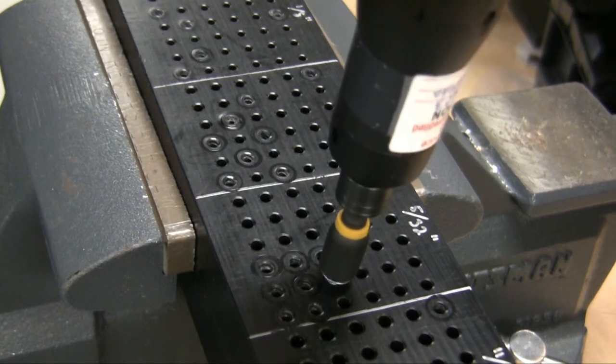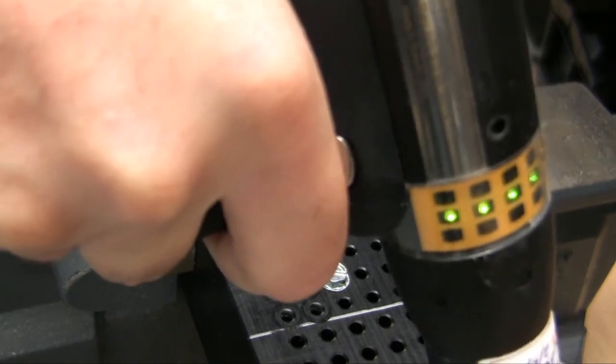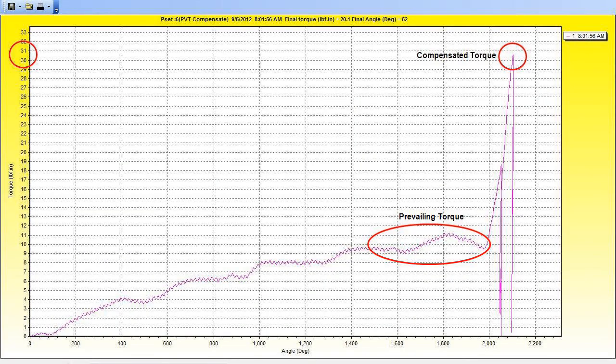When running a screw into the larger hole, the total torque applied is about 30 inch pounds. However, the tool reports a final torque achieved of 20 inch pounds. The additional 10 inch pounds were applied to prevailing torque before the screw had seated.